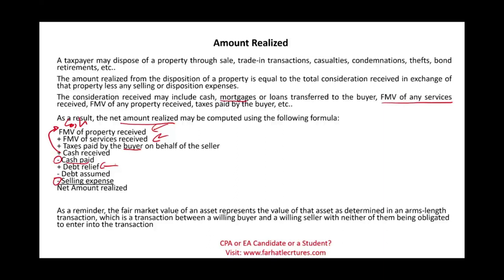The fair market value of any asset represents the value determined in an arm's length transaction — in contrast to a related party transaction. An arm's length transaction is when the transaction is entered between two willing buyer and seller, and neither is obligated to enter into it. In a related party transaction, the buyer and seller can influence each other and dictate something other than fair market value.